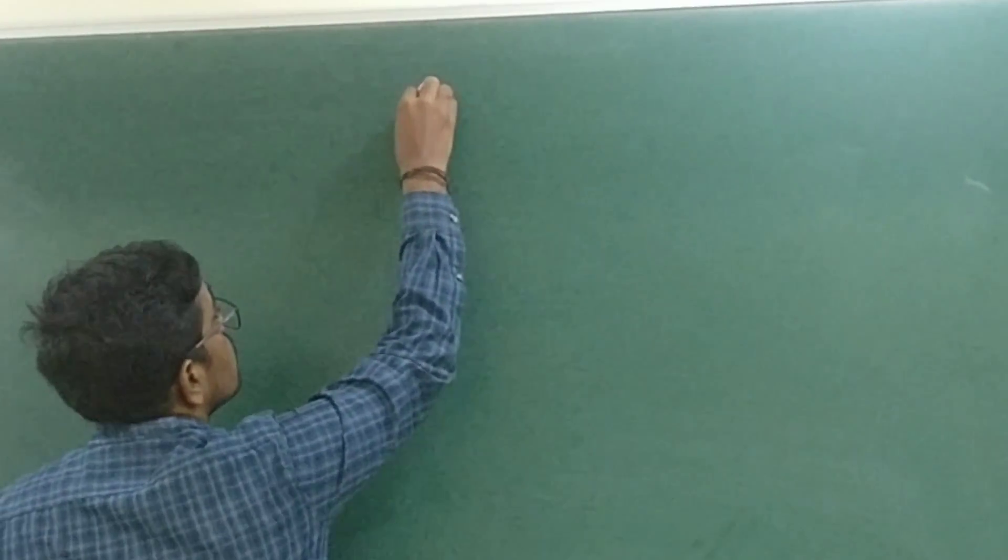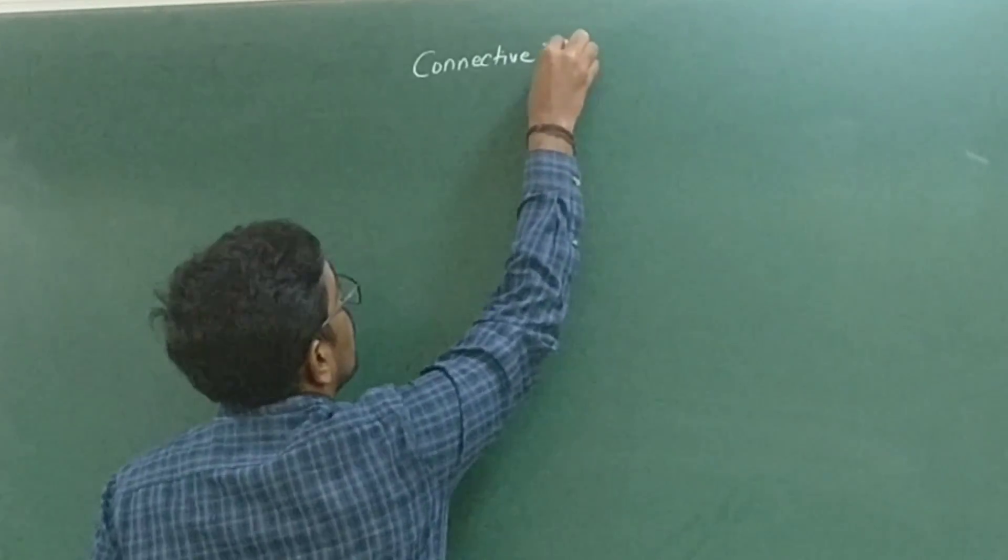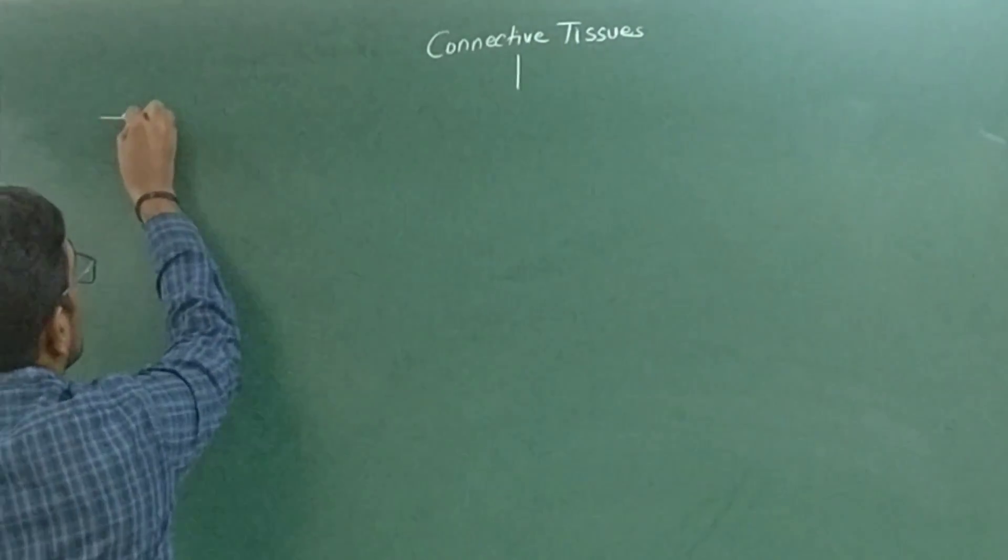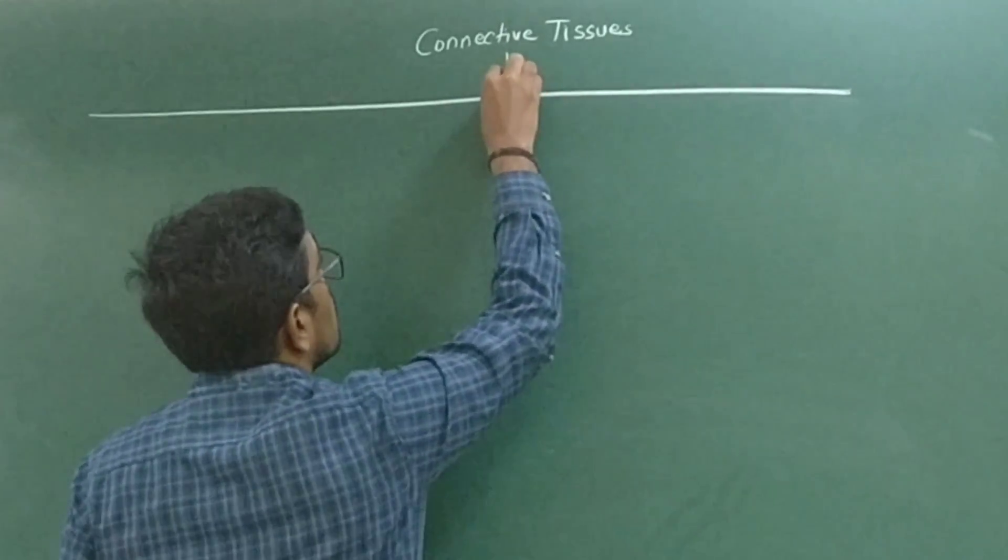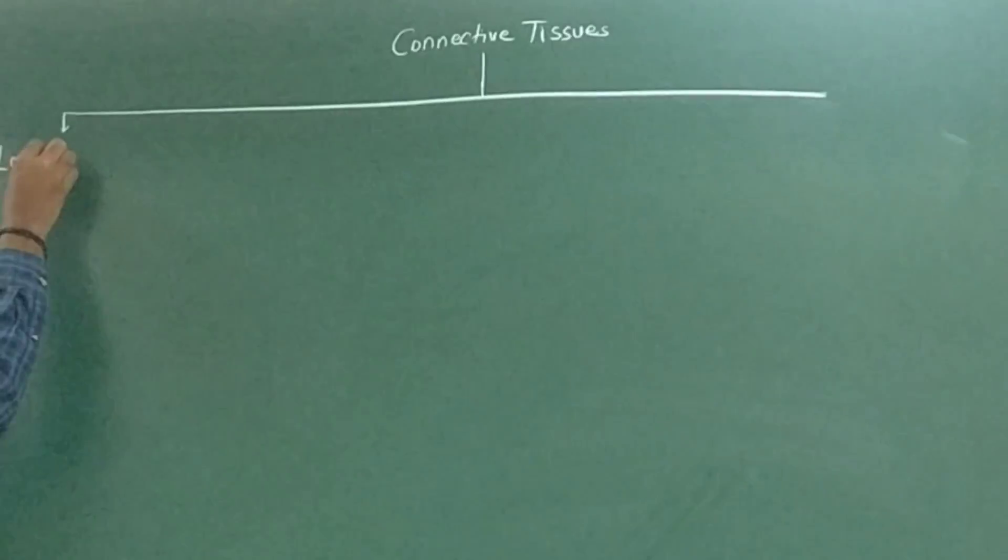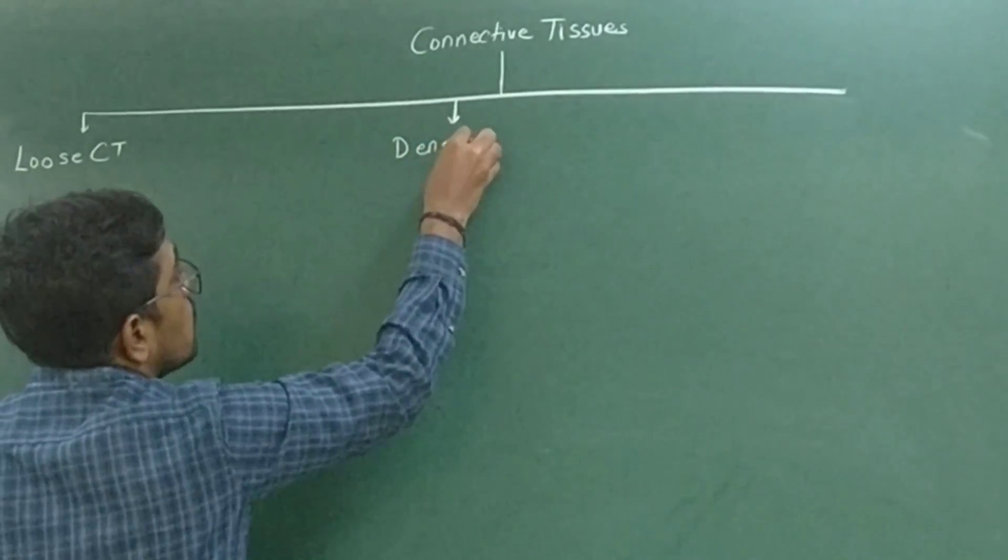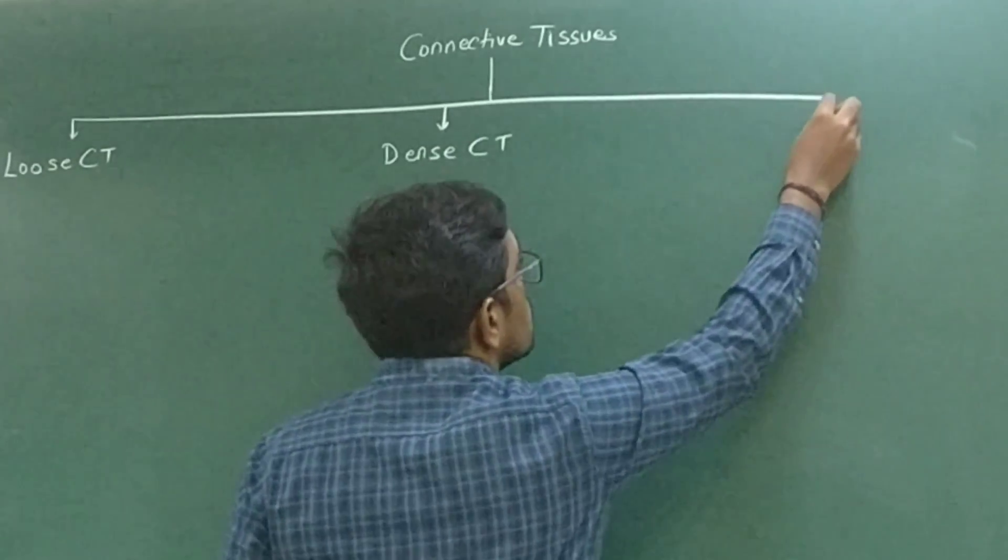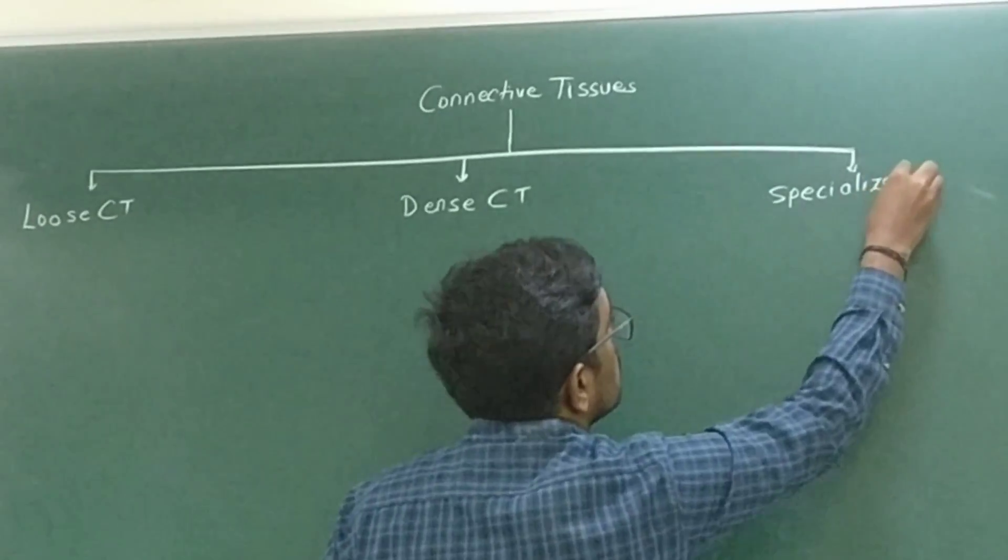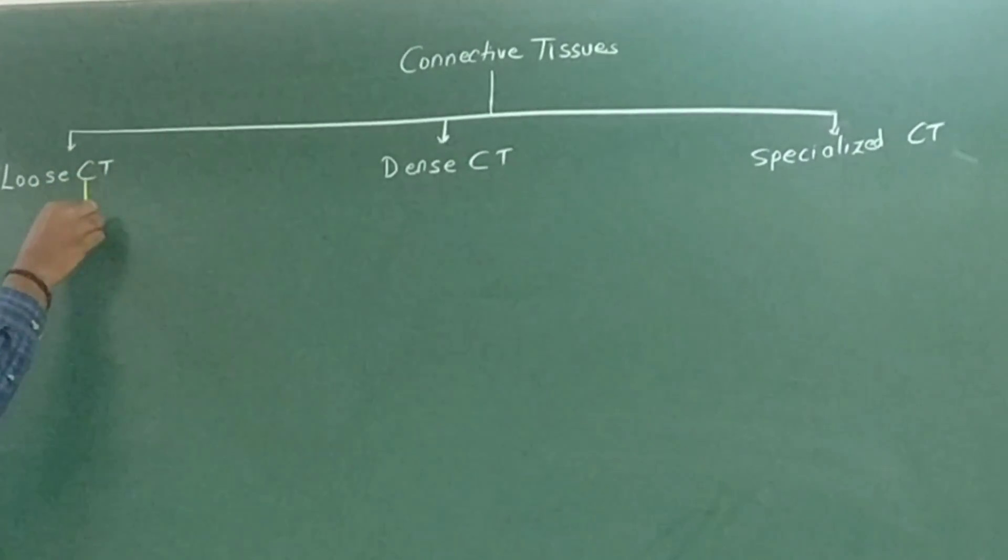Hello friends, in this video we are going to talk about connective tissue, one of the most important videos that you have been requesting for a long time. When I talk about connective tissue, we need to understand that this connective tissue is divided into three major types: one is called loose connective tissue, another is called dense connective tissue, and the third type is called special connective tissue. The word CT means connective tissue.